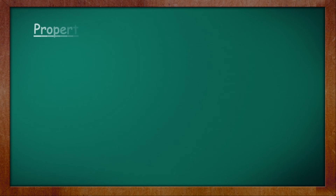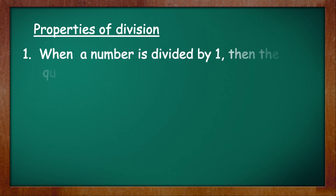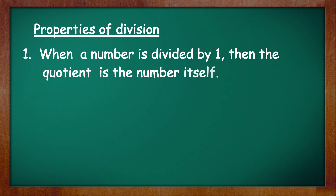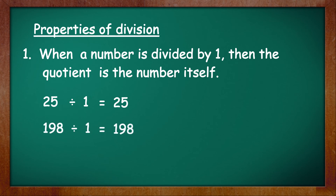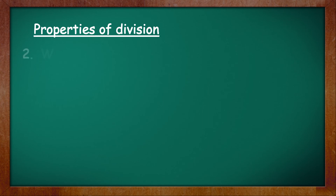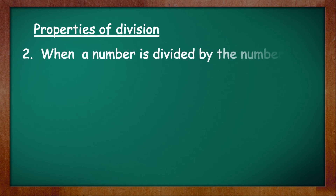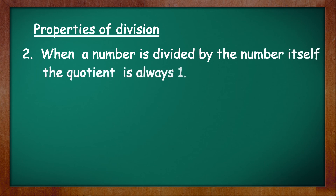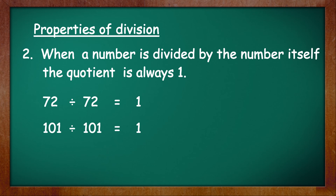Moving on to the properties of division. Property number one: when a number is divided by 1, then the quotient is the number itself. For example, 25 divided by 1 is equal to 25, or 198 divided by 1 is equal to 198. Property number two: when a number is divided by the number itself, the quotient is always 1. For example, 72 divided by 72 is equal to 1, or 101 divided by 101 is equal to 1.